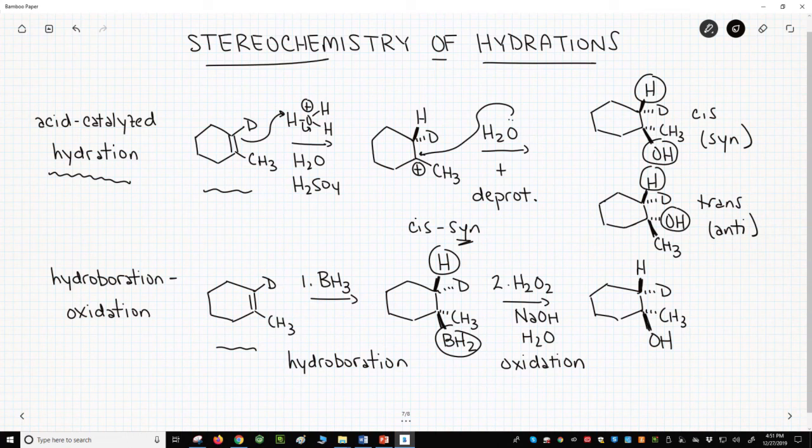In the oxidation step, the CB bond is replaced with a CO bond, and the stereochemistry of the bond is unchanged. This is a type of substitution, and this particular substitution involves retention of stereochemical configuration. Therefore, in the overall hydration product, the anti-Markovnikov alcohol, the H and OH are cis in the ring. The hydroboration oxidation is a sin addition.